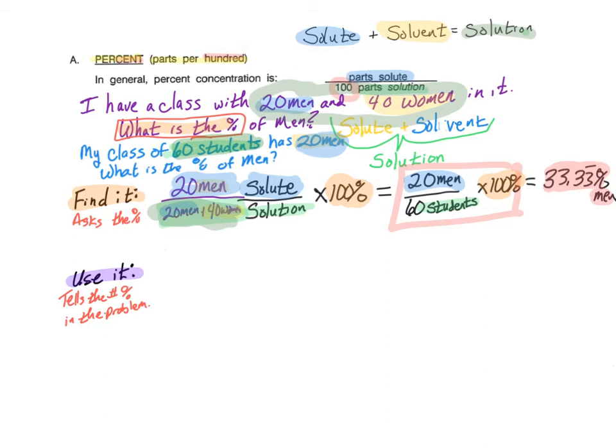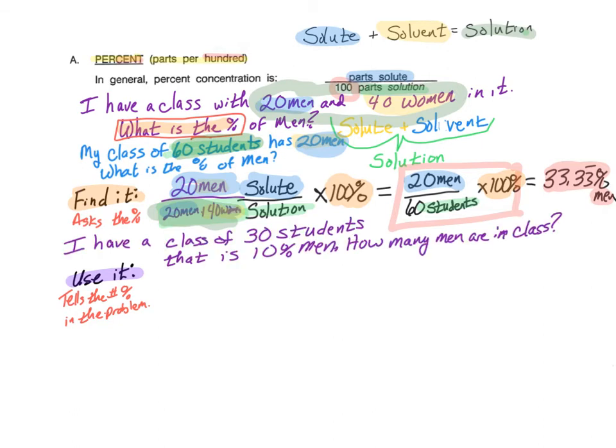Now let's look at a problem that is a use it problem. So in this sample, I have a class of 30 students that is 10% men. How many men are actually in the class? I'm going to guess you can already do this off the top of your head. But what is the pattern you should use? Step one, define what type of problem you have. Here you can see that I'm given the percent. So I obviously should not be looking for it, I should be using it.